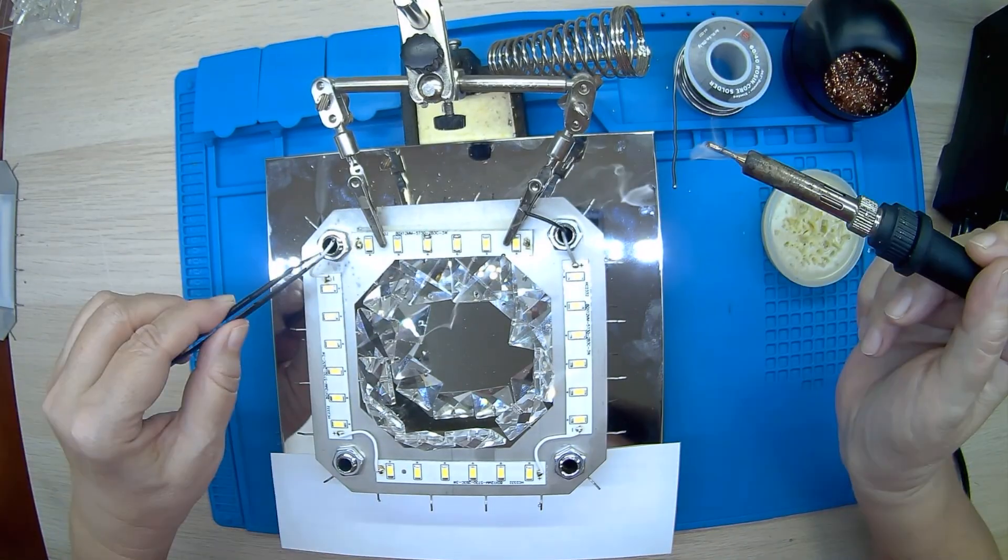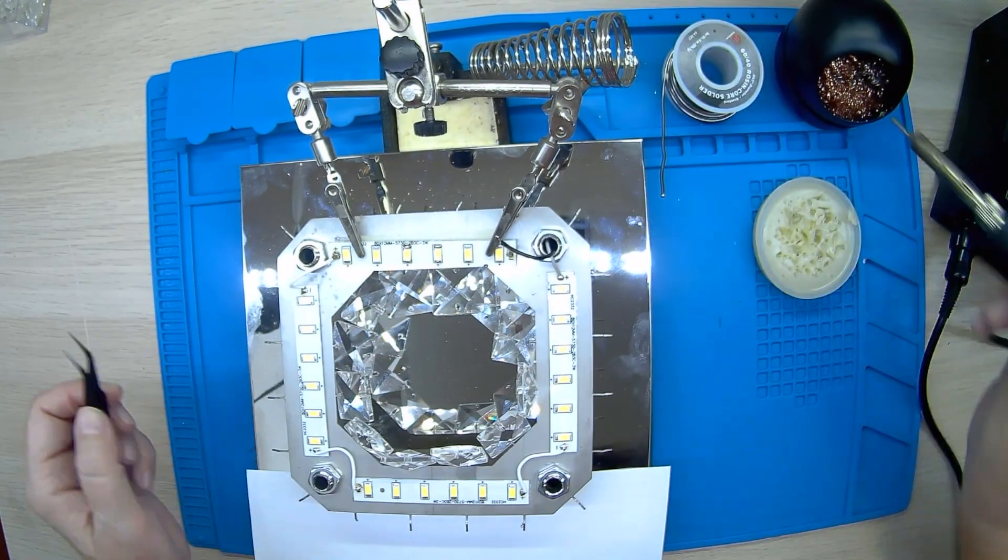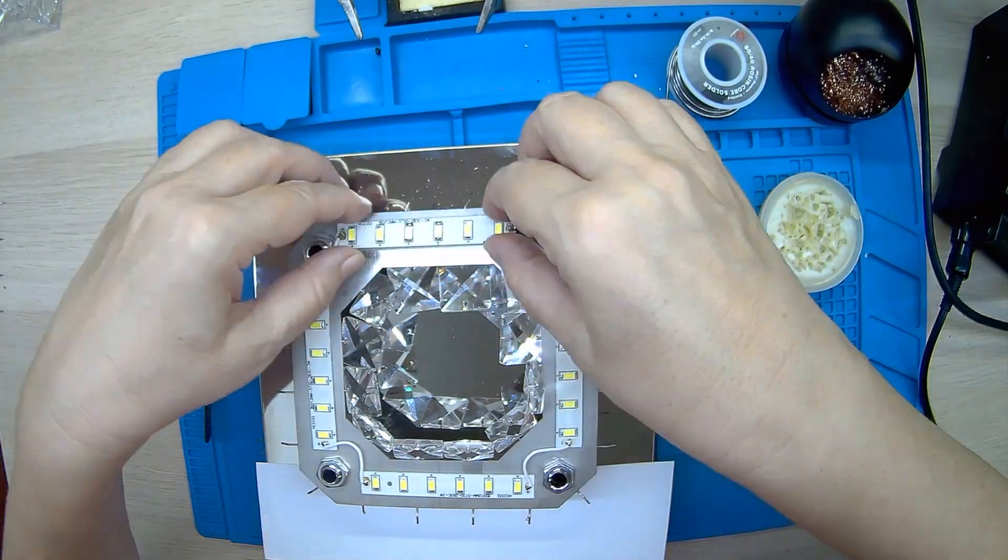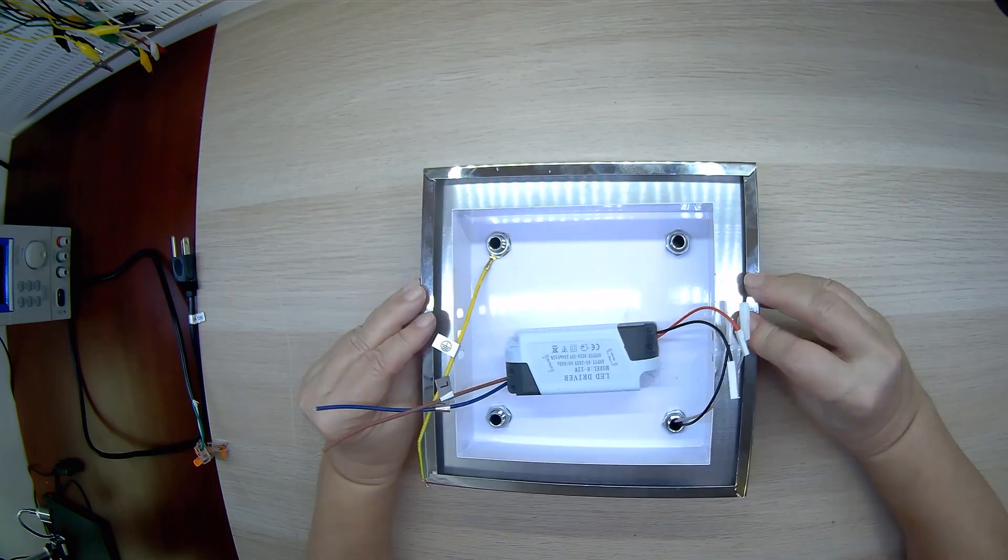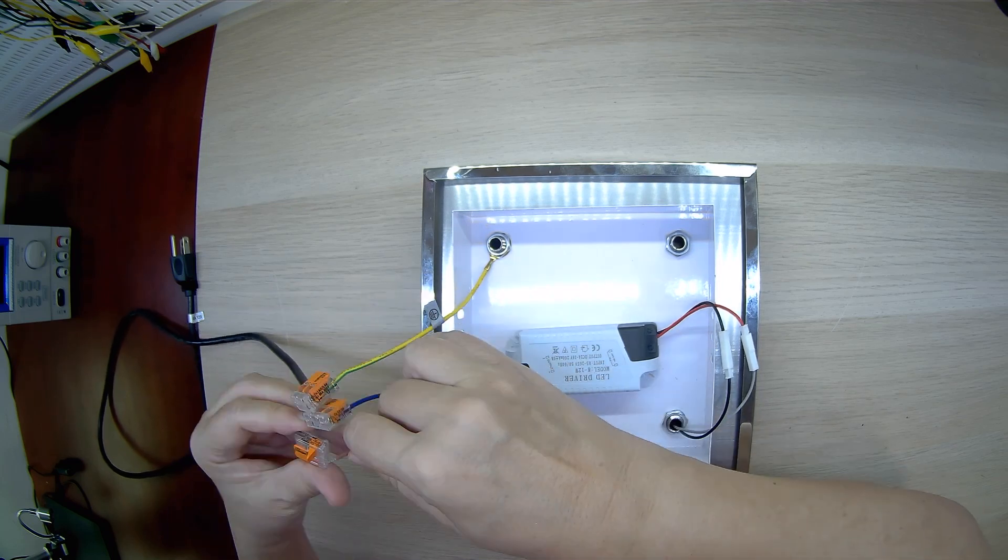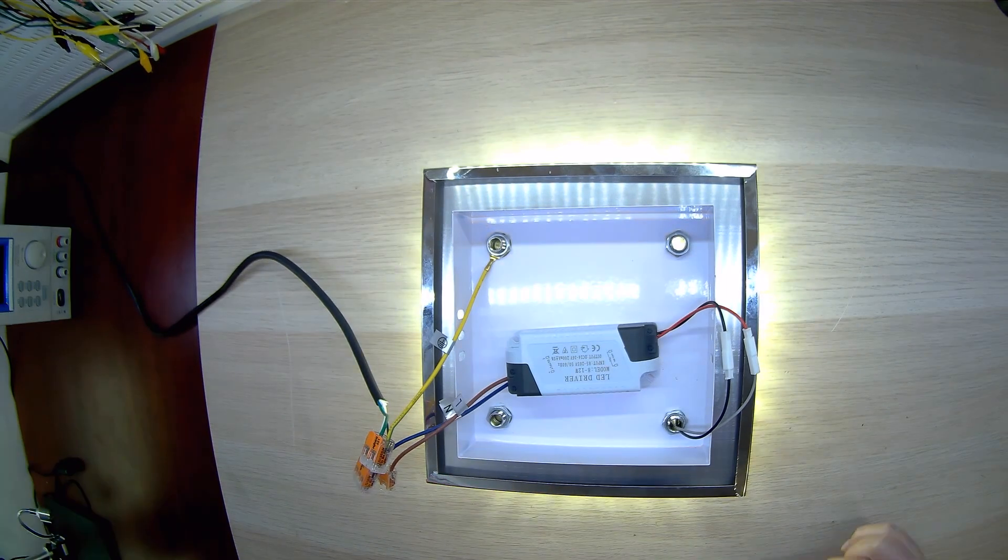Assembly of the LED light fixture is in the reverse order of disassembly and it is not at all difficult. Having assembled the light fixture, we connect the wires and plug it into the electrical outlet. Everything works perfectly.